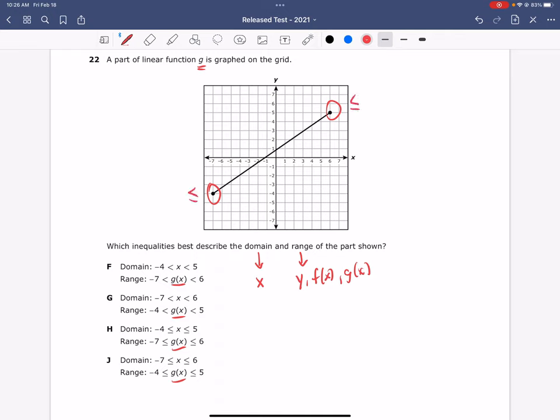Notice that in answer choices F and G, we do not have or equal to, so those answer choices are eliminated.